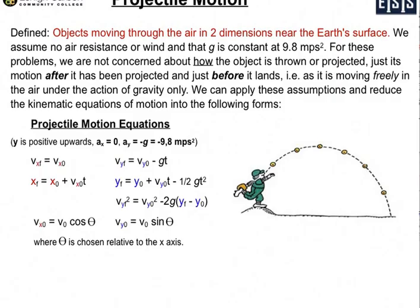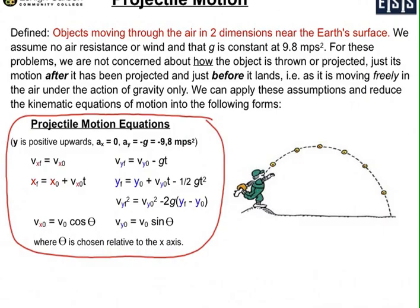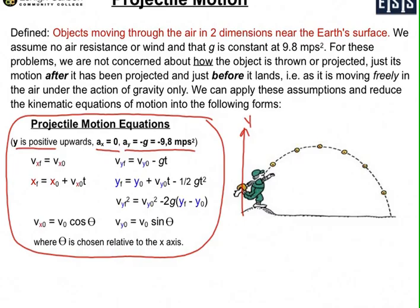When we apply these assumptions we can reduce the kinematic equations of motion into simplified forms. We're going to assume that y is positive in the upward direction, that acceleration in the x direction is zero, and we only have acceleration in the y direction, which is gravity. With our axis set this way — y positive up, x positive to the right — g is going to be negative 9.8 meters per second squared, acting in the opposite direction of our positive y.